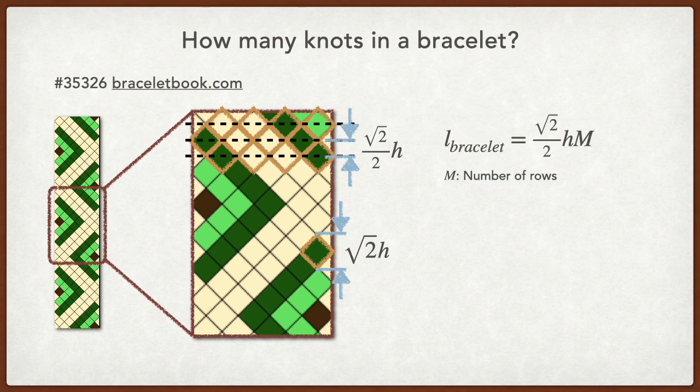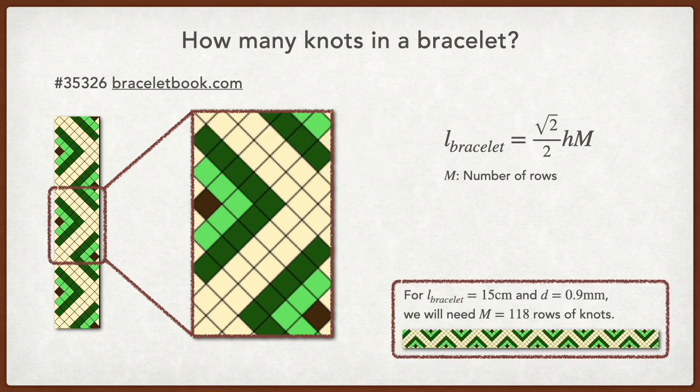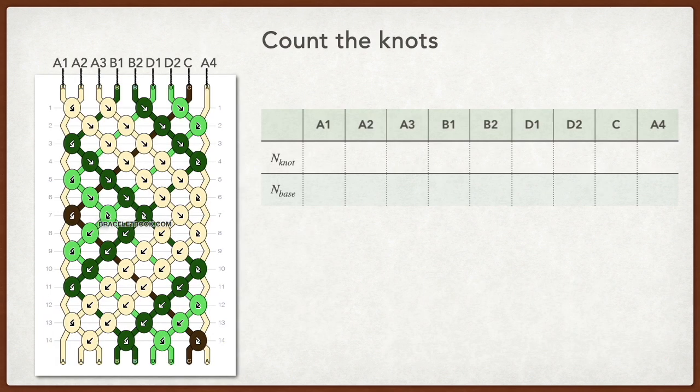For a bracelet with M rows, the length would be this. If we want to make a bracelet of 15cm long with embroidery floss of 0.9mm thick, we'll need 118 rows of knots. Now we know the total number of knots in a bracelet, we still need to find out how many times a string acts as a knotting string, and how many times it acts as a base string, because being a knotting string consumes the string way faster than being a base string. I'm going to do this by counting the number of knots in a pattern.